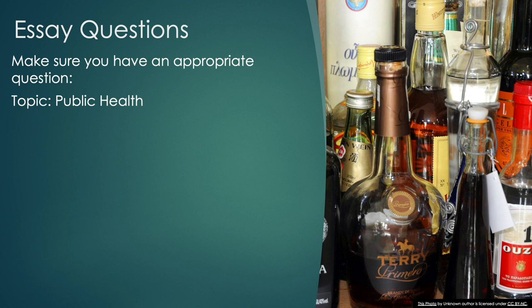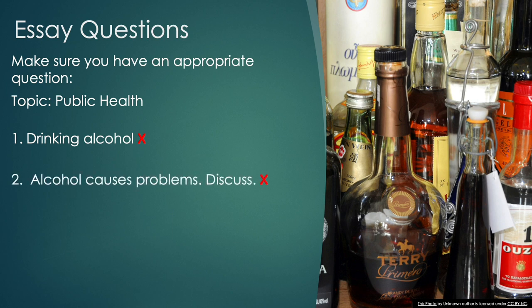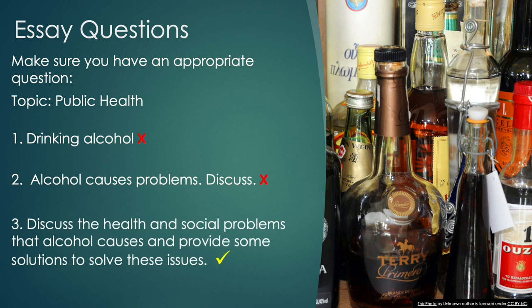Let's look at an example using the topic of public health. The topic we're going to look at is alcohol. The first example, 'drinking alcohol,' is too broad — we don't know what the question is about. Number two, 'alcohol causes problems, discuss,' is possibly okay but a little too narrow; we need more in the question. The third one, 'discuss the health and social problems that alcohol causes and provide some solutions to solve these issues,' is appropriate.